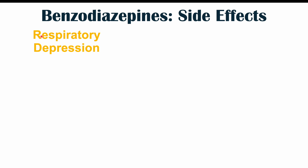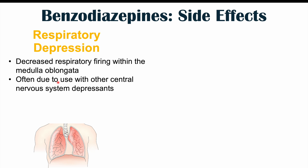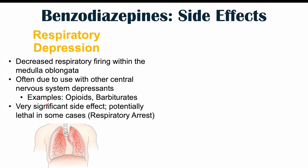Respiratory depression is a potentially serious side effect, involving reduced respiratory firing within the medulla oblongata. This is especially a risk with very high doses of benzodiazepines or when combined with other CNS depressants such as opioids and barbiturates. This can be potentially lethal, especially if respiratory arrest occurs.